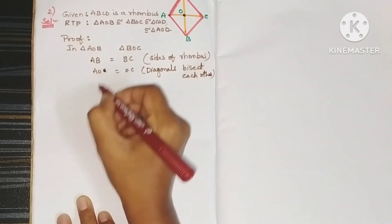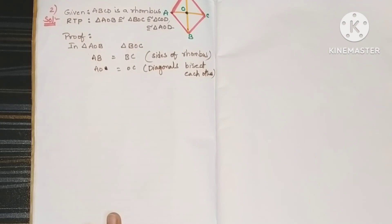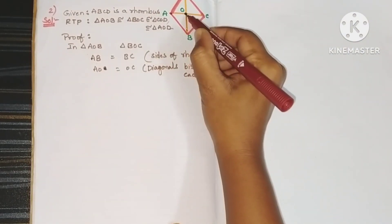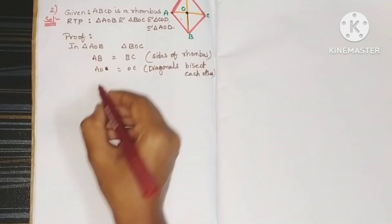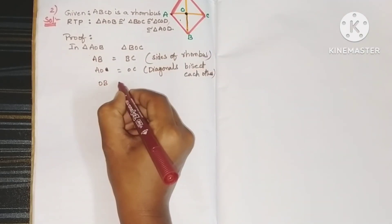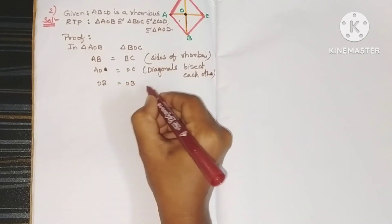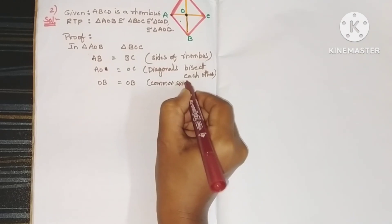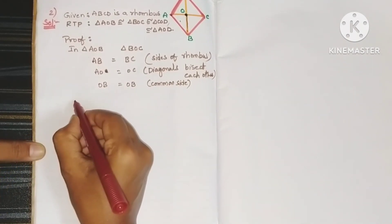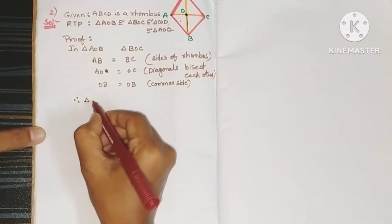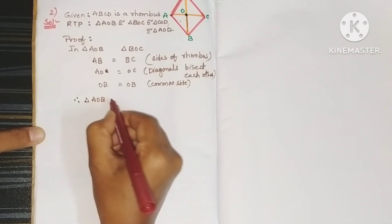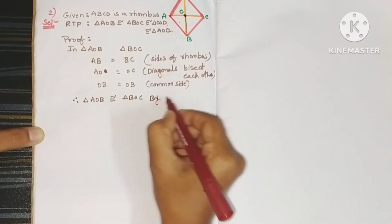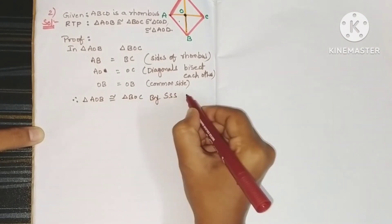The diagonals of a rhombus bisect each other, so AO equals OC. Also, OB is present in both triangle AOB and triangle BOC, so OB equals OB — common side. Therefore, three sides are equal, so triangle AOB is congruent to triangle BOC by the SSS (Side-Side-Side) rule.